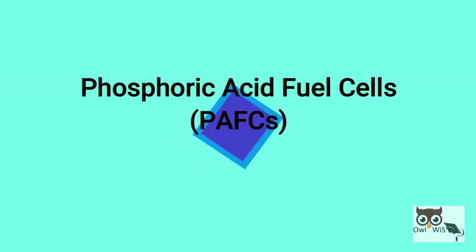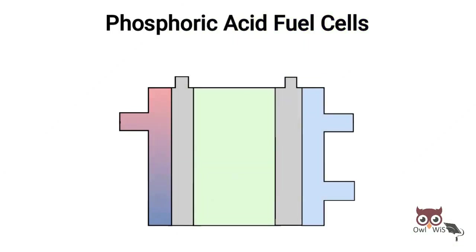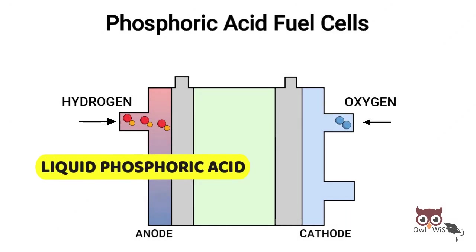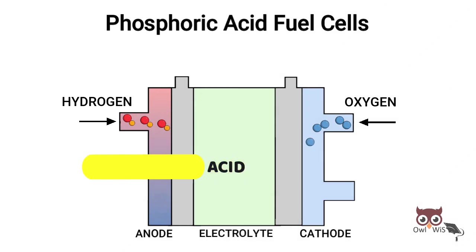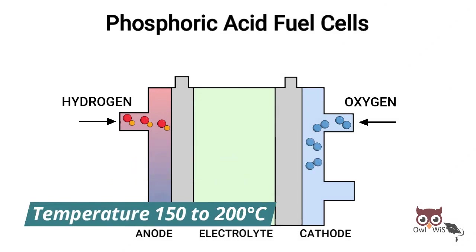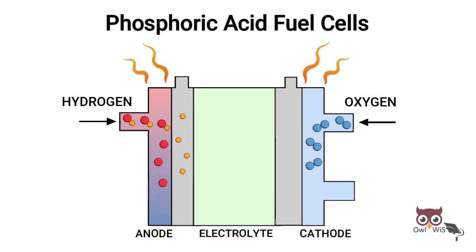Phosphoric acid fuel cells use porous carbon electrodes containing a platinum catalyst and liquid phosphoric acid as an electrolyte. These cells commonly work at temperatures of 150 to 200 degrees Celsius. This high temperature will cause heat and energy loss if the heat is not removed and used properly.